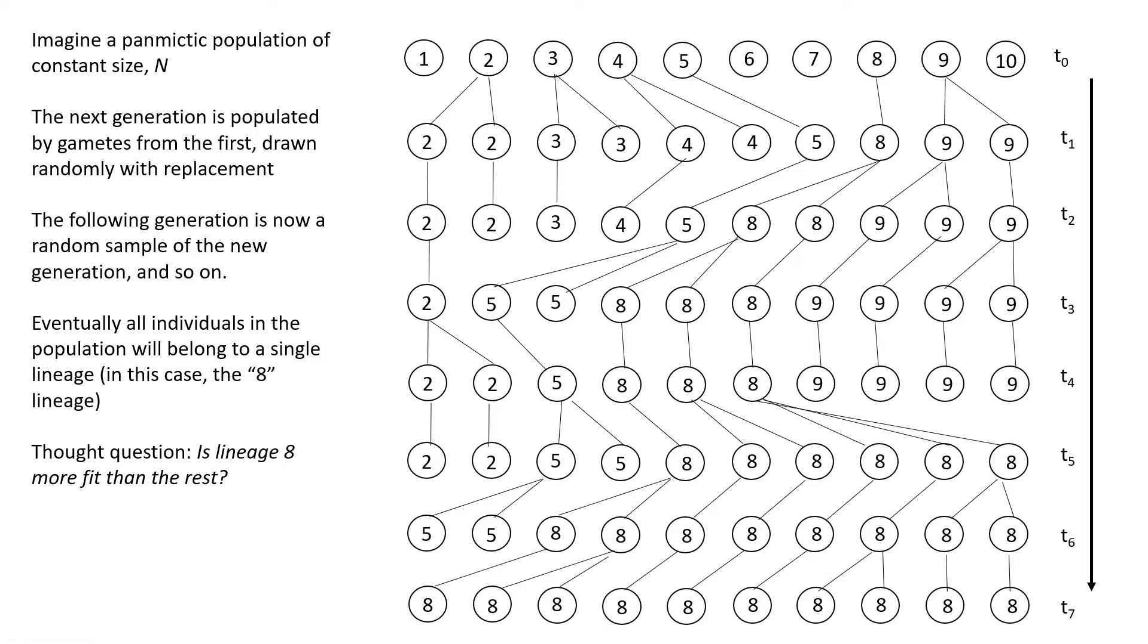Okay. So as a kind of thought question, is lineage eight more fit than the rest? I should think about this for a second. And think about your understanding of fitness in like an evolutionary context and whether or not there is any form of selection going on in this population. So think about it. If you think you have a good answer, please drop it in the comments. I would love to see what people think about this particular question.